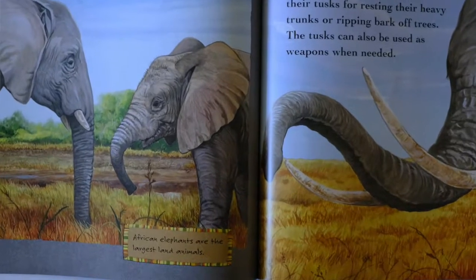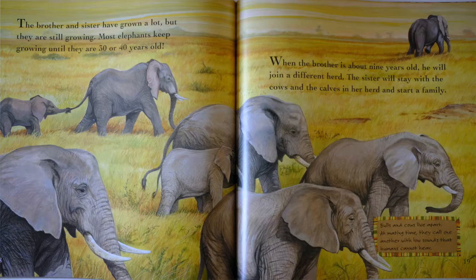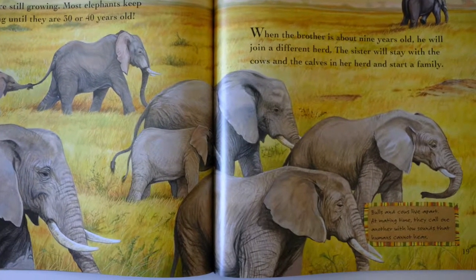African elephants are the largest land animals. The brother and sister have grown a lot but they are still growing. Most elephants keep growing until they are 30 or 40 years old. When the brother is about 9 years old, he will join a different herd. The sister will stay with the cows and the calves in her herd and start a family. Bulls and cows live apart.